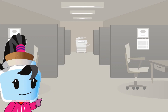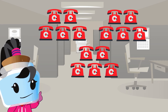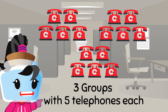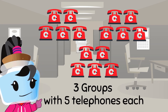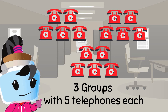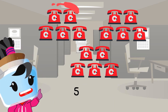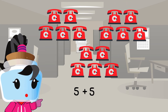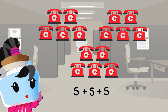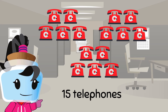Let's move on to these telephones. We see three groups with five telephones each. So we can write this as five plus five plus five equals fifteen telephones.